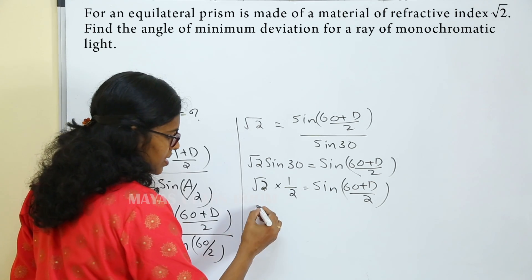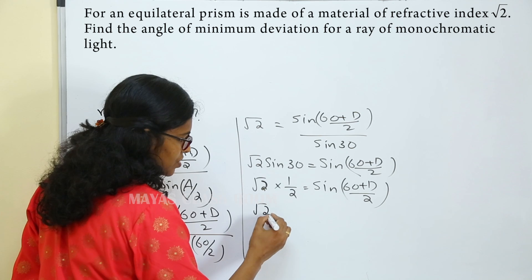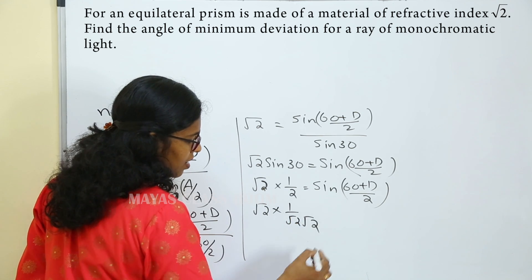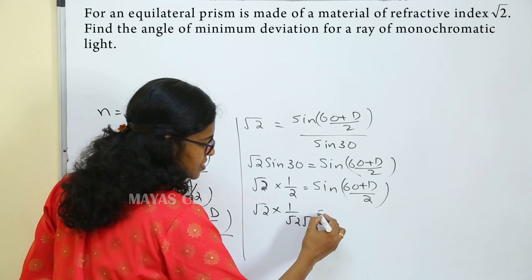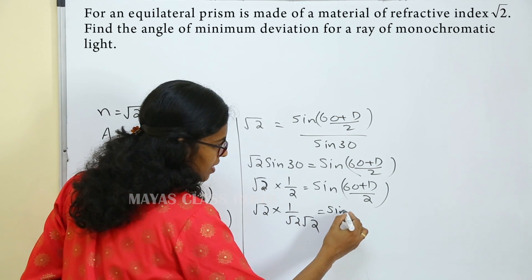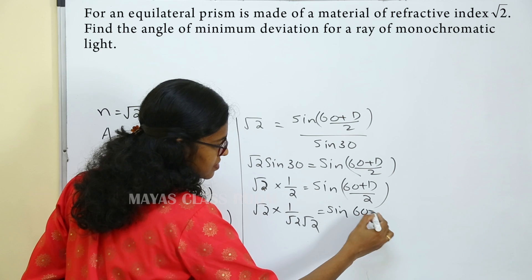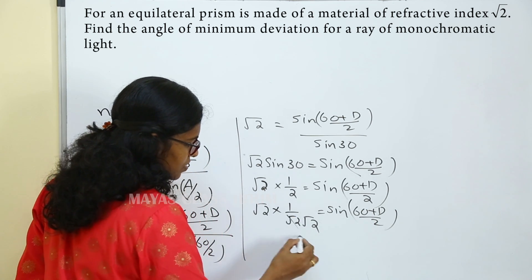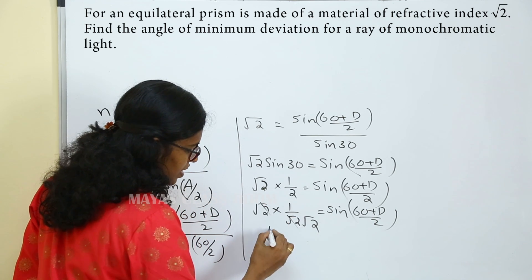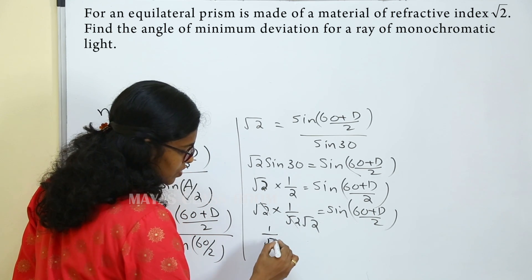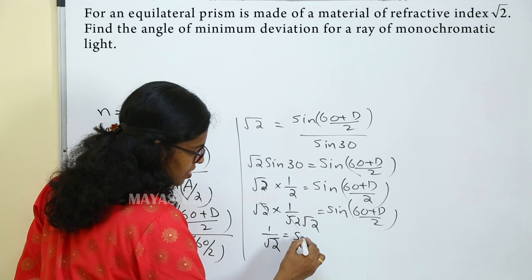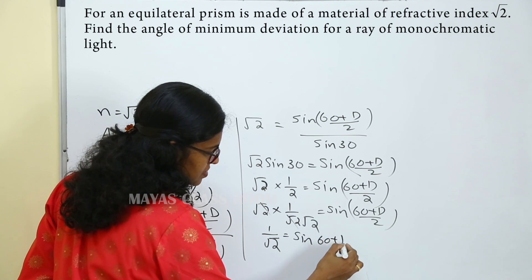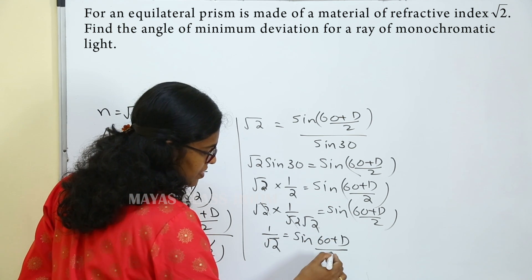Rearranging: root 2 into 1 by 2 — that is root 2 into 1 by root 2 — is equal to sin(60 plus D) by 2. So 1 by root 2 is equal to sin(60 plus D) by 2.